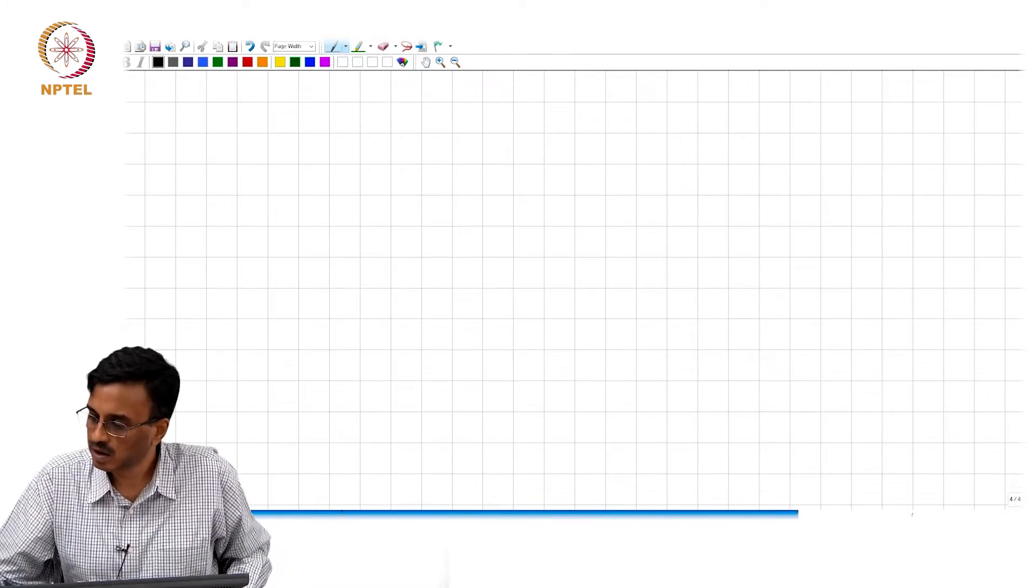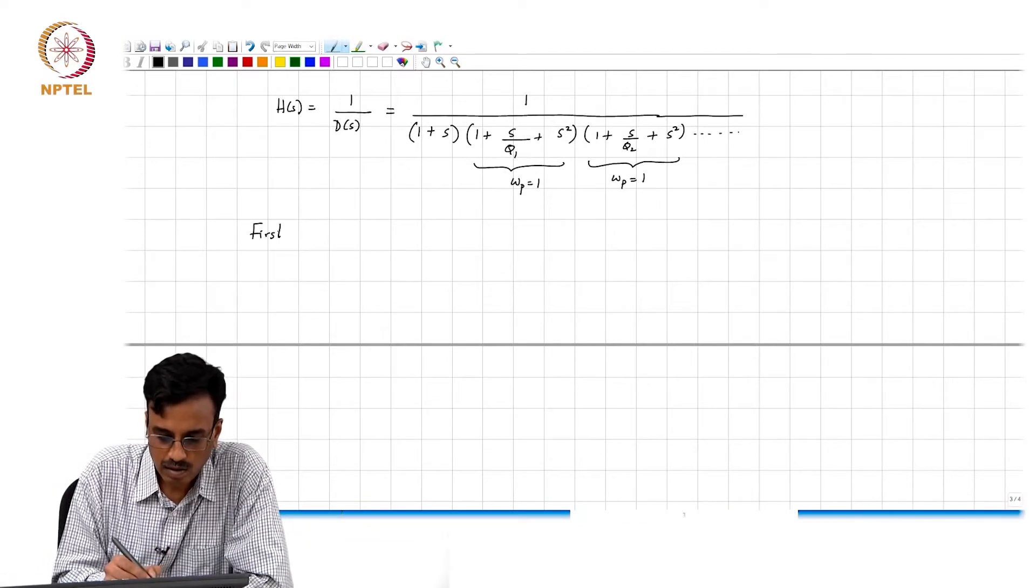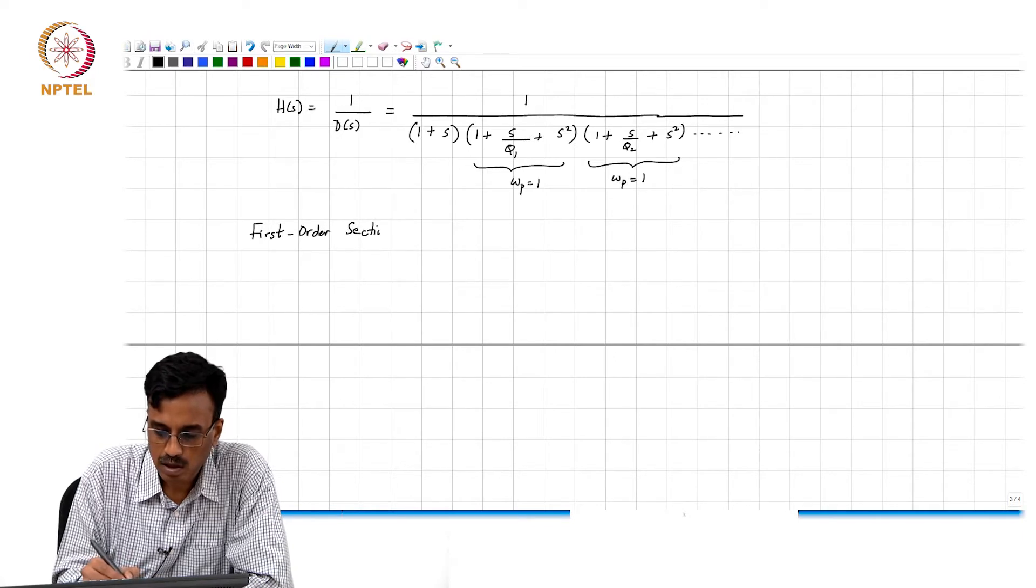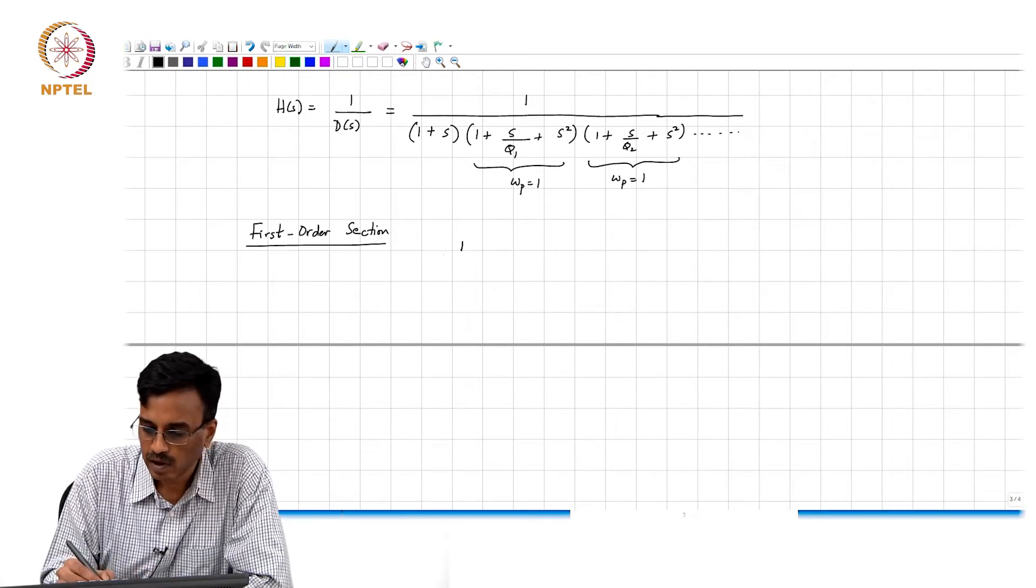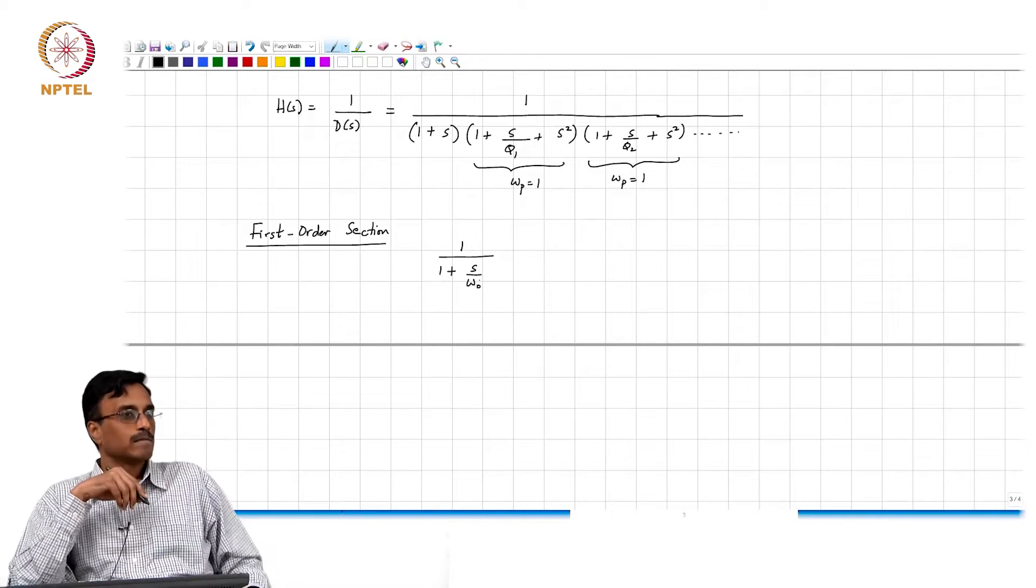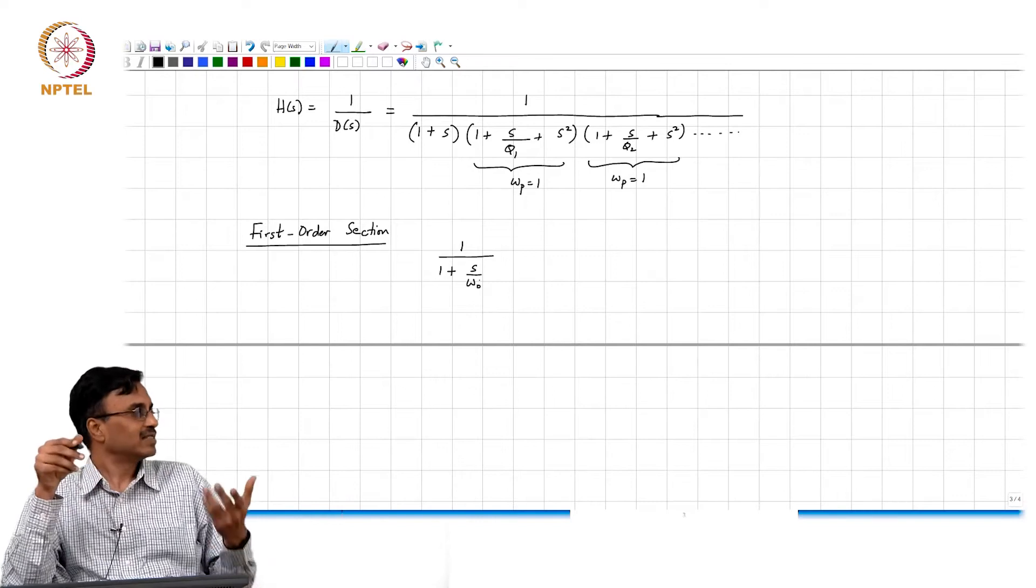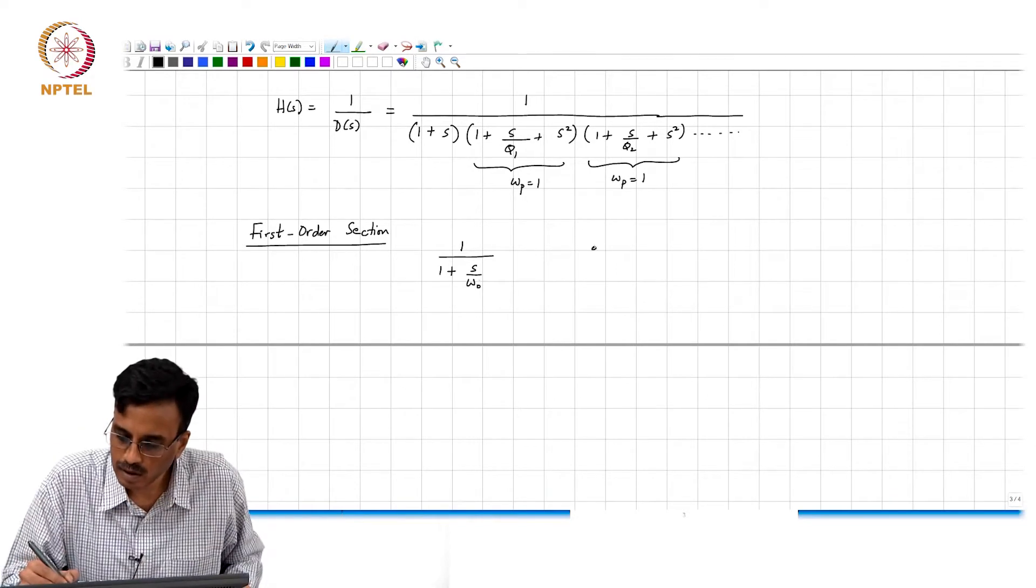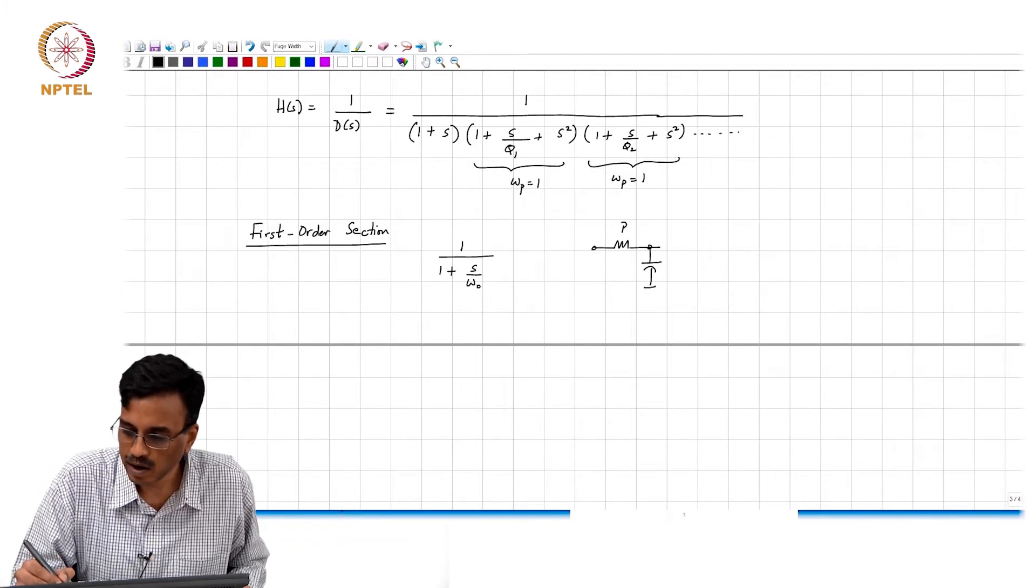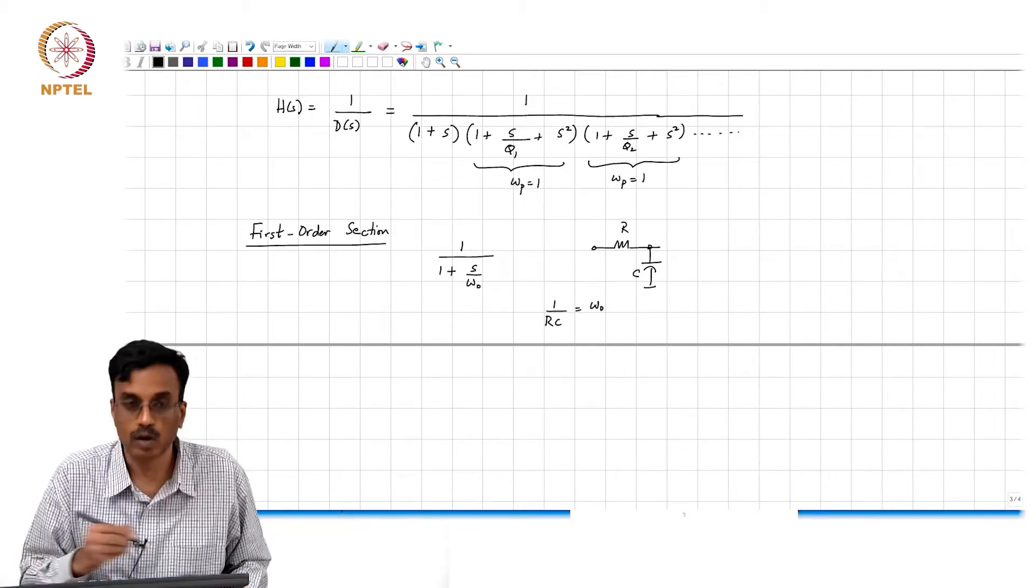First order section: what is the general first order all-pole section transfer function? 1 over (1 + s/omega_naught). And how do we realize this? Just an RC. One approach is to simply say you have R and C and 1/(RC) equals omega_naught.